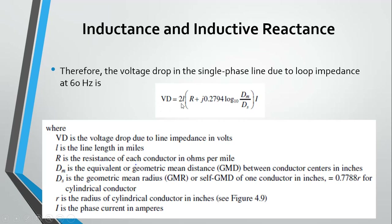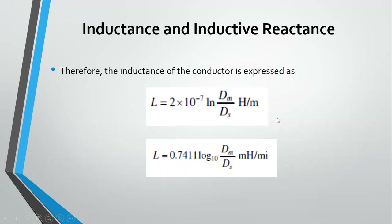The mathematical formula for inductance can be calculated as: the voltage drop V_D = 2L(R + j·0.2794 · log(D_M / D_S)) · I, where L is the length of the transmission line, R is the resistance, D_M is the geometrical mean distance, and D_S is the geometrical mean radius of one conductor. The complete formula for inductance L = 2 × 10⁻⁷ · ln(D_M / D_S) H/m.